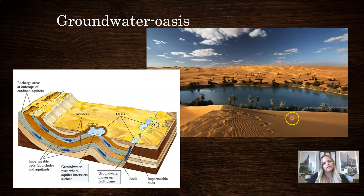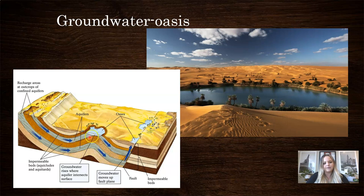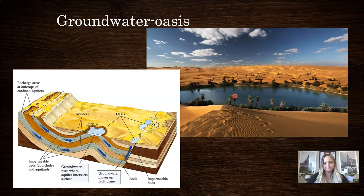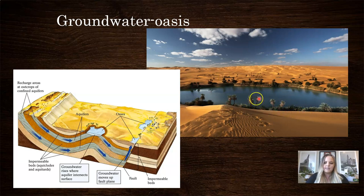Other groundwater-surface water interactions include oases. In a situation where the bedrock underneath is folded — specifically an anticline, concave down — if groundwater sits at the top of one of those layers and that layer is perched to the surface, you'll end up seeing perched groundwater in the form of an oasis. An oasis is usually a little pond in the middle of a desert or valley. It's often short-lived, especially in a desert area, because it's so hot the water will evaporate, though some last longer depending on how much water is present.